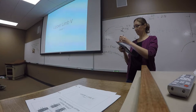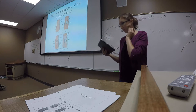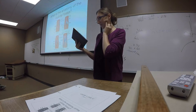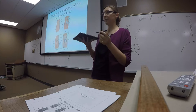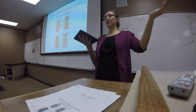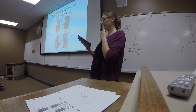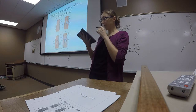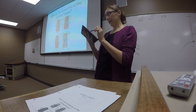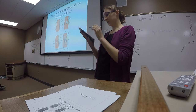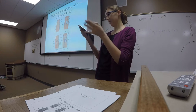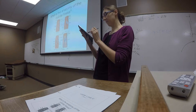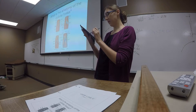The cubital fossa is that region of transition between the arm and the forearm. It is bordered by two muscles on the inferior medial and lateral borders: the brachioradialis and the pronator teres.